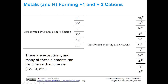If atoms lose two electrons, they will form these cations: magnesium two plus, calcium two plus, strontium, iron, cobalt, nickel, copper, zinc, tin, mercury, and lead. Several of these have other charges that could be present — for instance, iron can be either two plus or three plus. But memorizing this list will get you very far in this course.